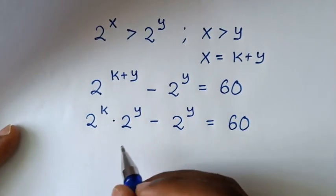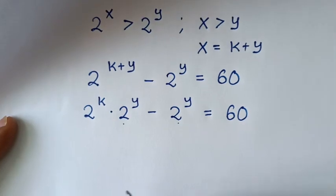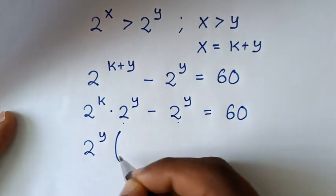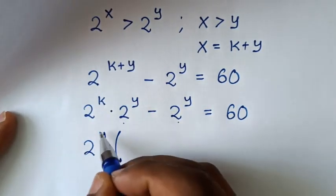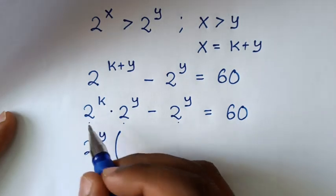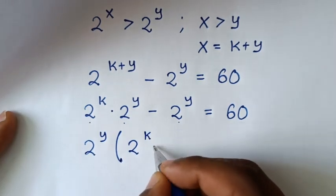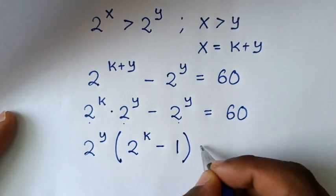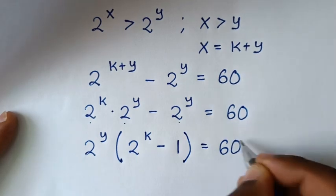Now, 2 to the power of y is common, so we take 2 to the power of y out as a factor. Dividing through gives us 2 to the power of y, times the bracket 2 to the power of k minus 1, equals 60.